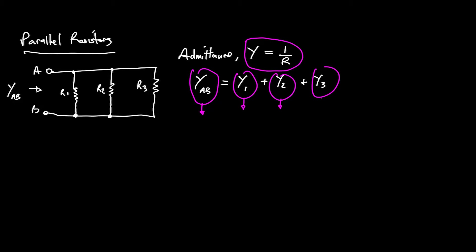Because admittance is one over resistance, we can rewrite all those terms. Going back, I'll write one over the resistance between A and B — transforming admittances to resistances. As long as I do it to both sides, it's fine. So: 1/R_AB = 1/R1 + 1/R2 + 1/R3. You may have seen that formula before and wondered where it came from — well, that's where it comes from.